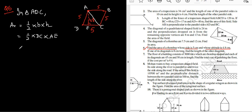Let's put the values. Half into five into 4.8. So let's cancel them, 2.4. Okay, 5 into the 2 is 10 and this is 20, so 12. Is it clear? 12 centimeter square is the area of this particular triangle.